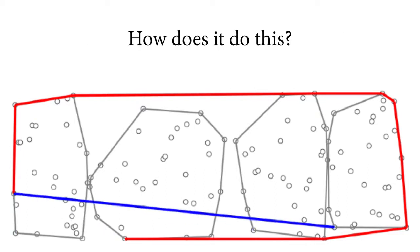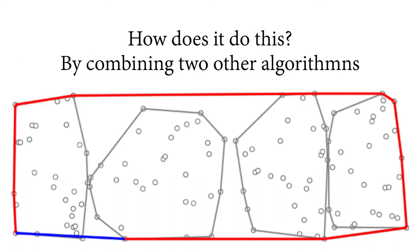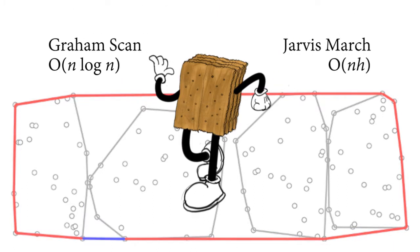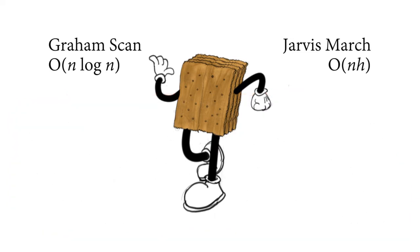And how does it do this? By combining two other algorithms, specifically the Graham Scan and Jarvis March. Both of these algorithms are also used to find convex hulls, just in different ways.